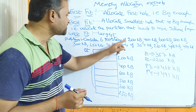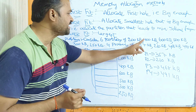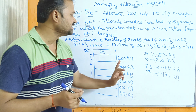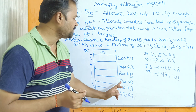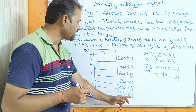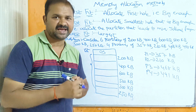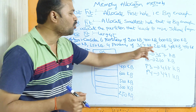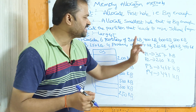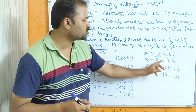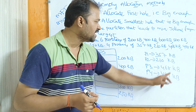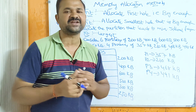The first partition is 200 KB, second is 400 KB, third is 600 KB, fourth is 500 KB, fifth is 300 KB, and the last partition is 250 KB. We have four processes: P1 size is 357 KB, P2 size is 210 KB, P3 size is 468 KB, and P4 size is 491 KB.